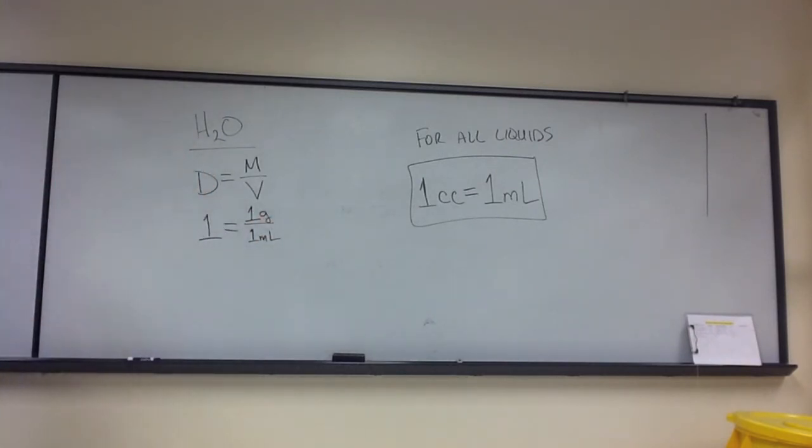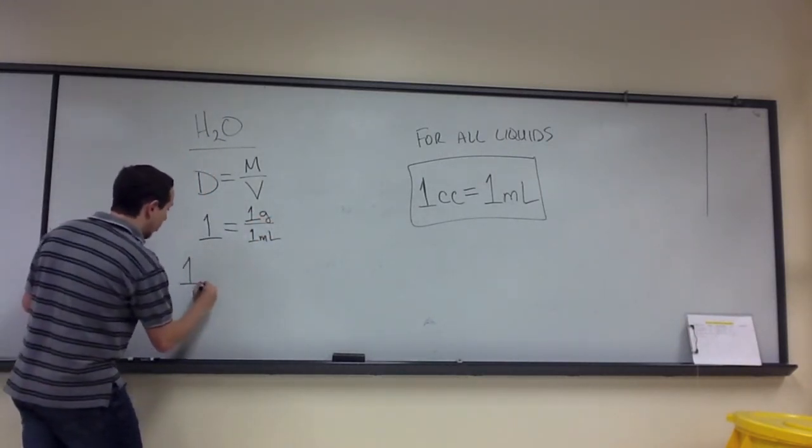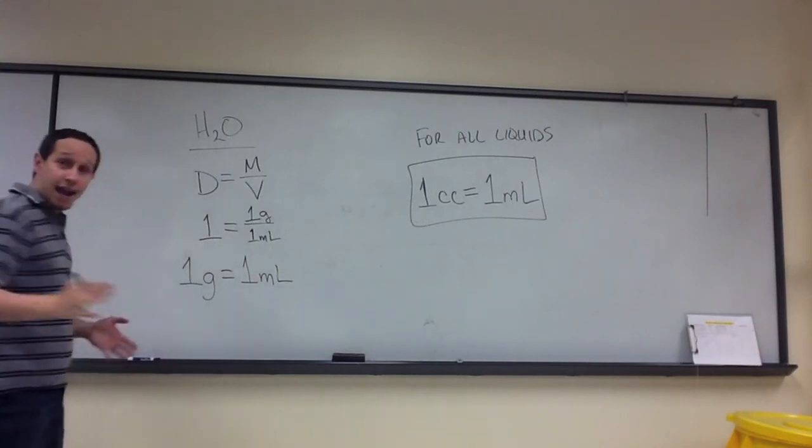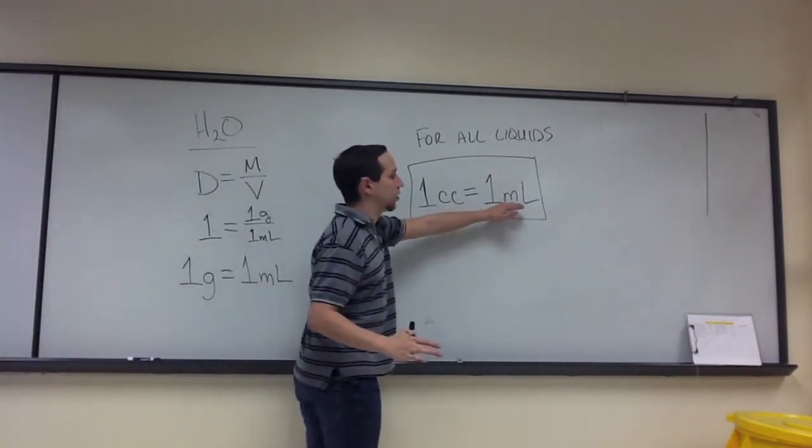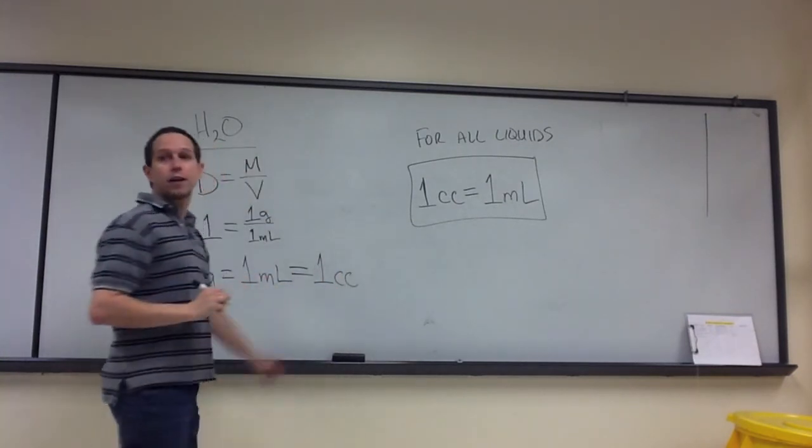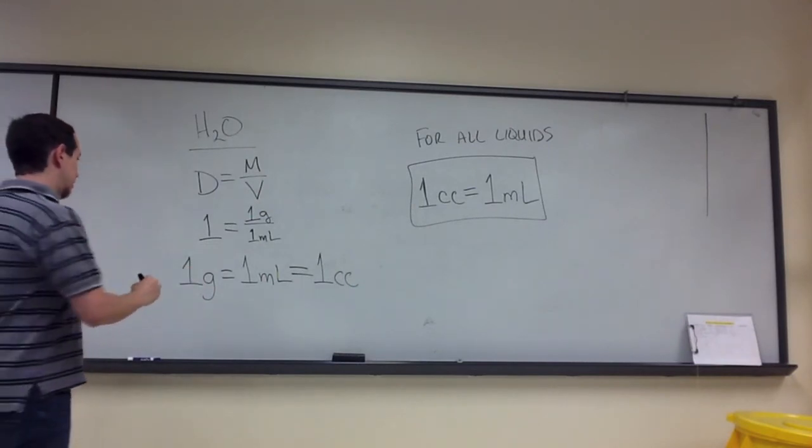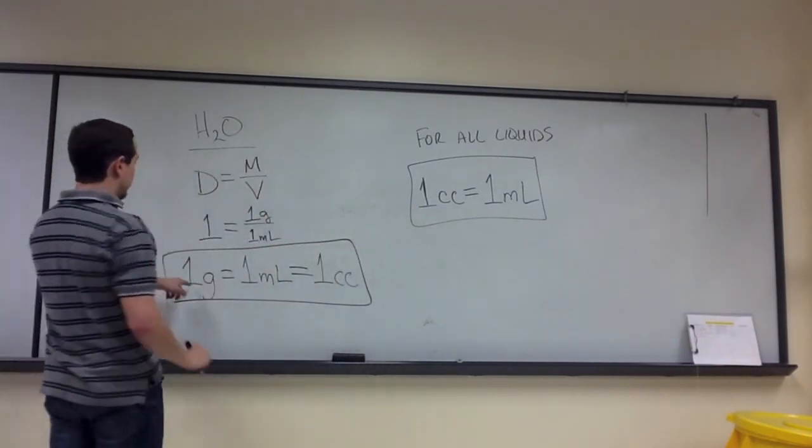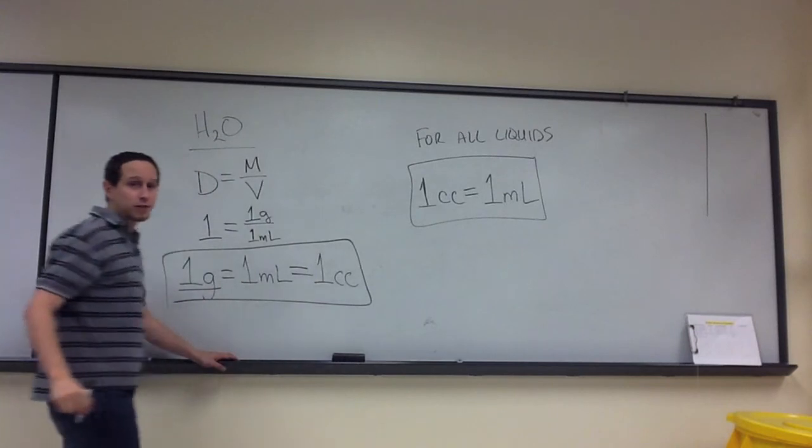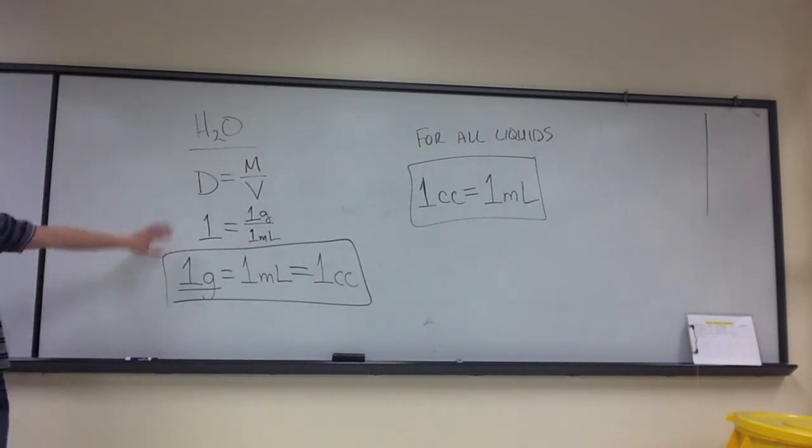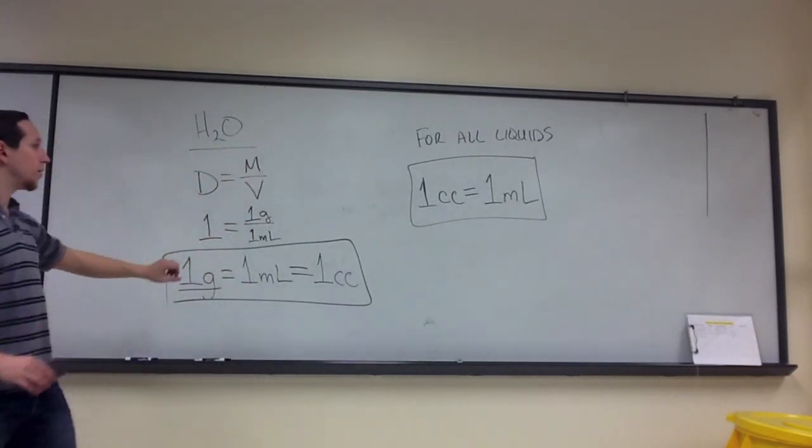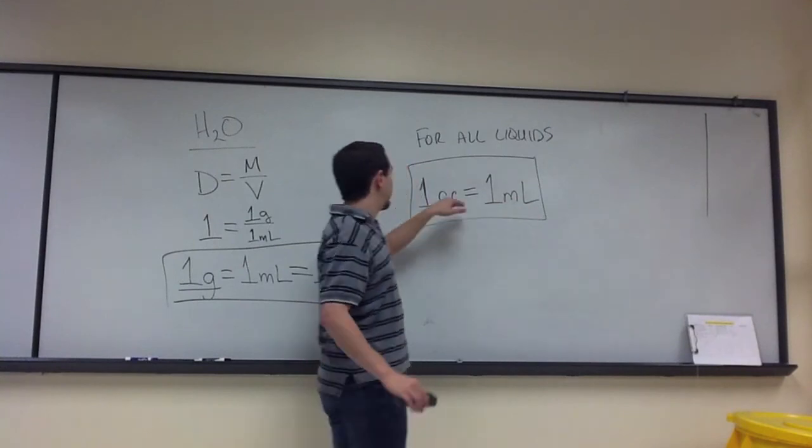So water is unique in that one gram of water equals one milliliter of water, and if one milliliter of any liquid equals one cc, then that means that one gram of water equals one cubic centimeter of water. So this particular principle here, where one gram is equal to both one milliliter and one cubic centimeter, is exclusive to water. Special property of water and a way to correlate milliliters to cubic centimeters.